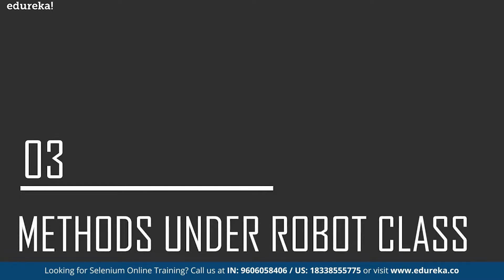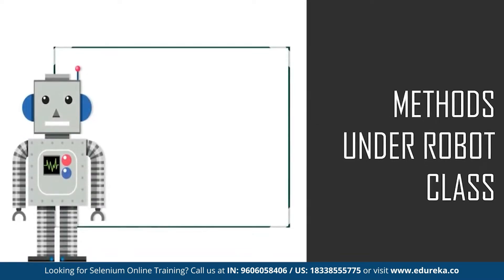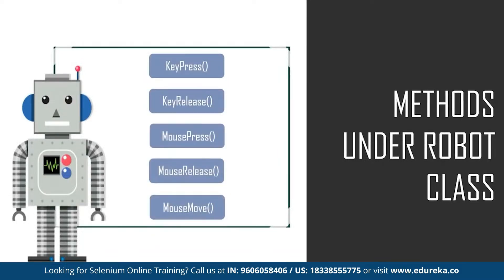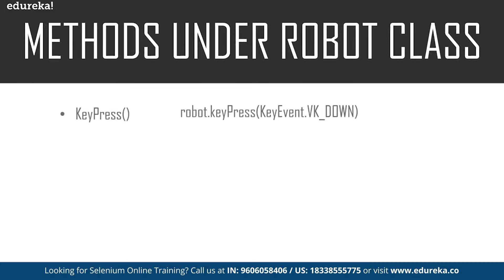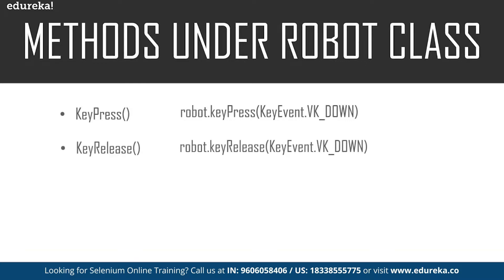Now let's look at the different methods used while working with the Robot class. There are basically five different methods. The first is the keyPress method, which is used to press any key on the keyboard — for example, a command to press the up key. Next is the keyRelease method, which is used to release a pressed key — for example, releasing the Caps Lock key. These are the methods used to control keyboard functions.